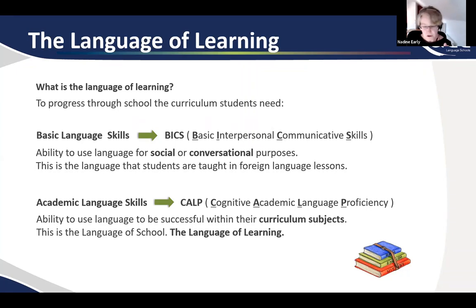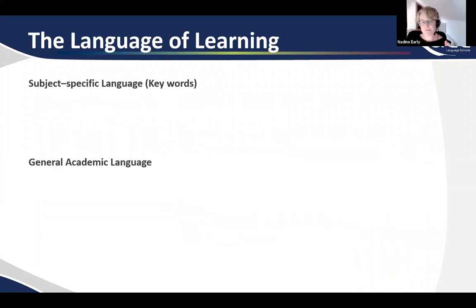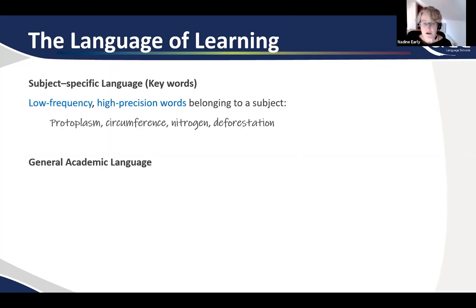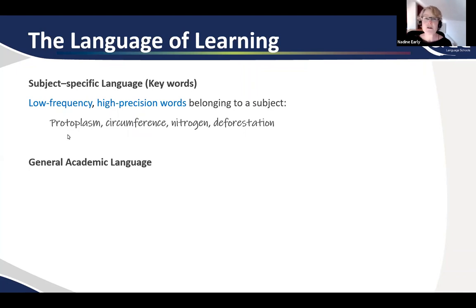All students need this language, not just those studying in a CLIL context. So what does the language of learning consist of? Broadly, it consists of what we call subject-specific language or keywords, and general academic language. Subject-specific language are the keywords which are crucial to an understanding of the subject but which are only really used in that subject. They are low frequency — they don't crop up very often, and usually not outside of the subject itself. And they're high precision — they have one very precise technical meaning.